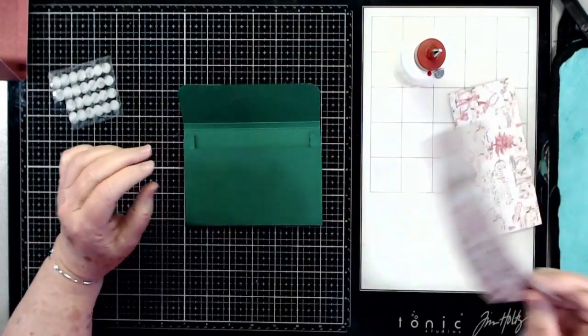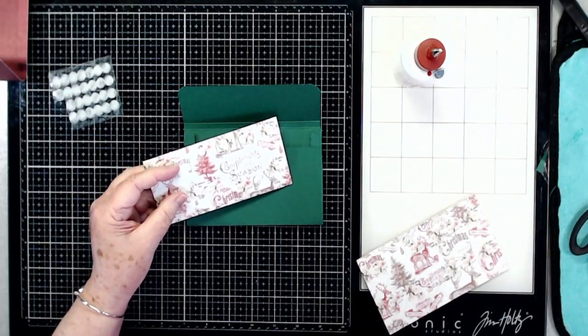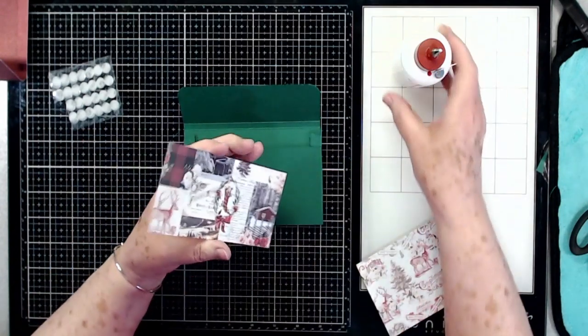I have a piece cut for the front right here, and this piece is cut at five and three quarters by two. We're going to put that right there.